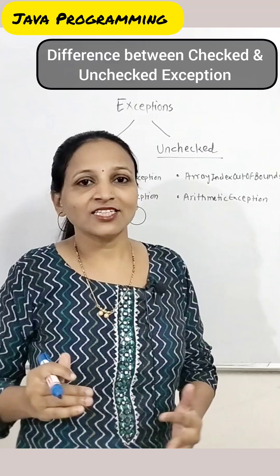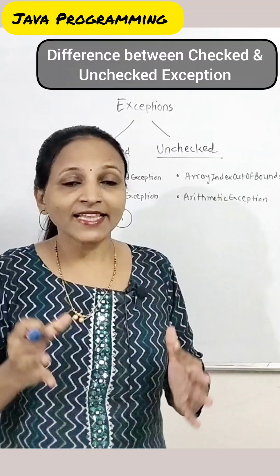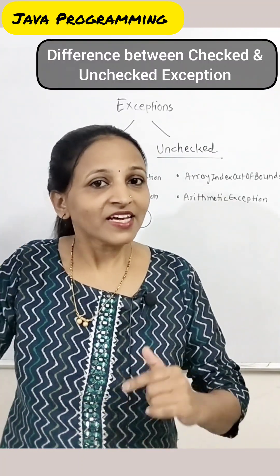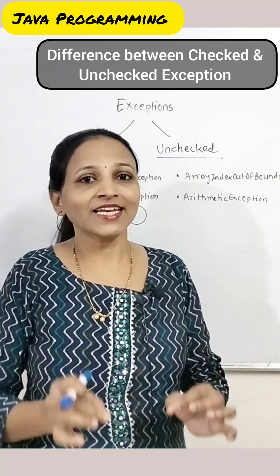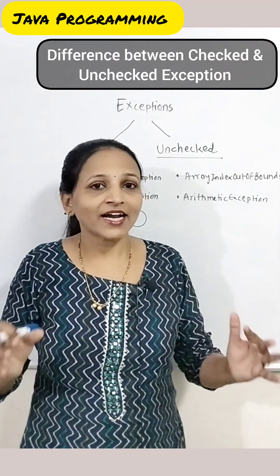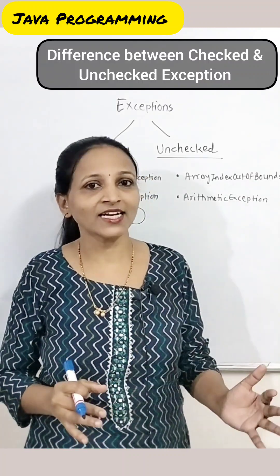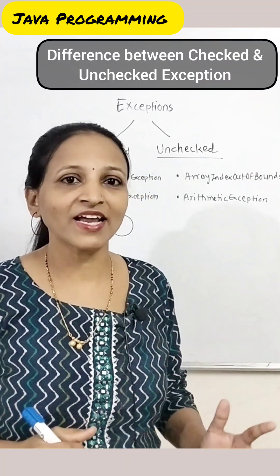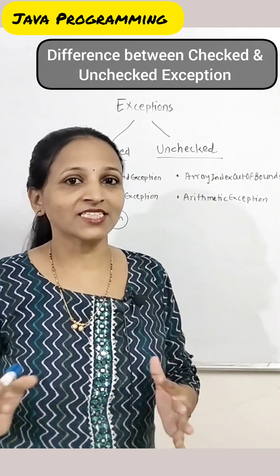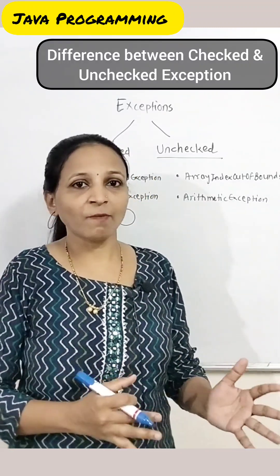Some exceptions in Java — like ClassNotFoundException, FileNotFoundException, and IOException — have a possibility of occurring, and they are checked by the compiler in advance. The programmer must compulsorily write a try-catch block or exception handling routine to handle these exceptions, and those come under checked exceptions. If the programmer does not handle these checked exceptions, the compiler will always give an error indicating there is a possibility of such an exception and that it must be handled.